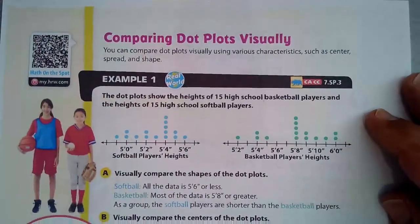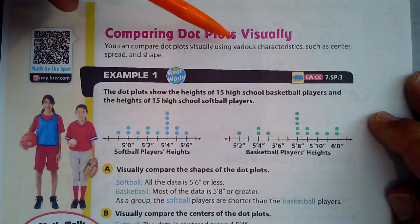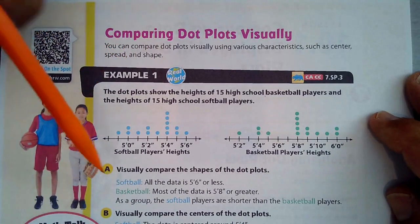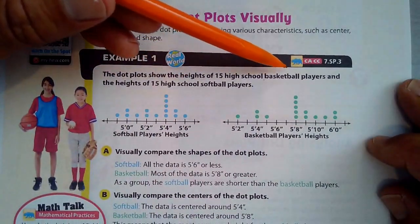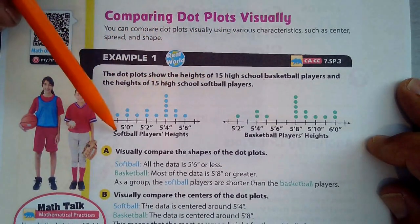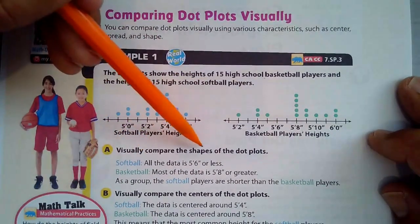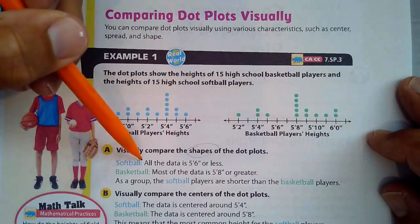Comparing dot plots visually. You can compare dot plots visually using various characteristics such as center, spread, and shape. Putting this all together, we have dot plots that show the heights of 15 high school basketball players and the heights of 15 high school softball players. Softball players are here, basketball players are here. Visually compare the shapes.